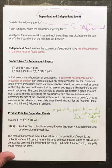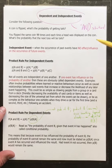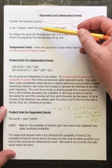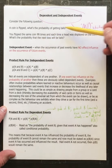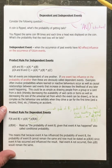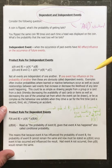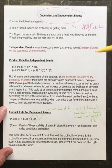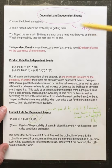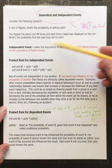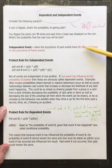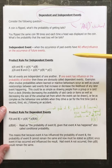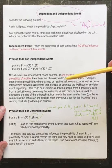Here we talk about a coin being flipped. If you flip the same coin 99 times and each time a head was displayed, what's the probability the next toss will be tails? It's still one half. The probability each time stays the same. These are examples of independent events — the occurrence of past events has no effect or influence on the occurrence of future events.